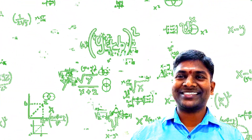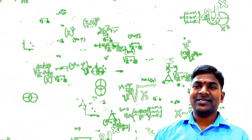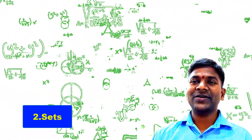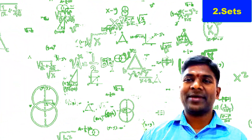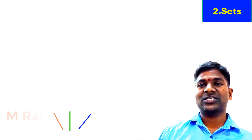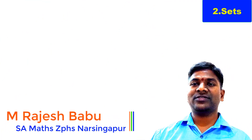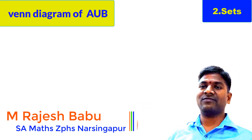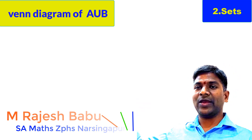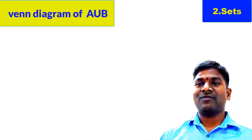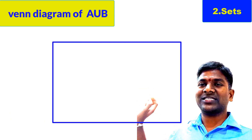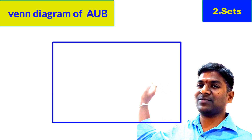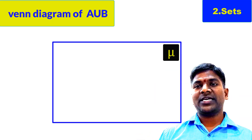Hi viewers and students. Sometimes the question may be asked to draw the Venn diagram for A union B, A intersection B, A minus B, without writing the elements — just we have to draw the Venn diagram. First we try to write the Venn diagram for A union B. We draw a rectangle which represents the universal set, and in the right top corner the universal set symbol mu can be written.